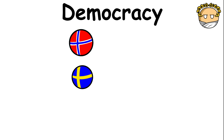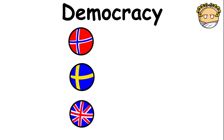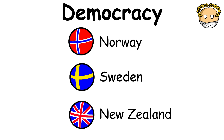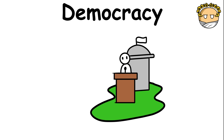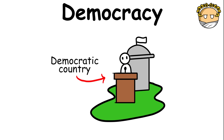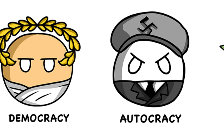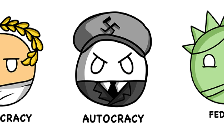Some of the most democratic countries in the world include Norway, Sweden, and New Zealand. However, the problem in a democratic country is that it can be too unstable due to constant leadership changes.